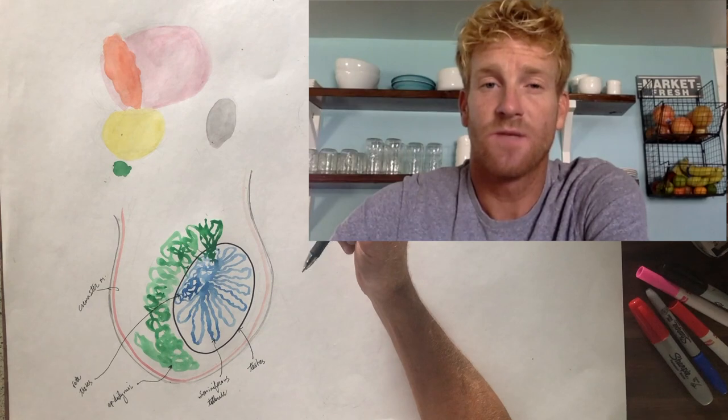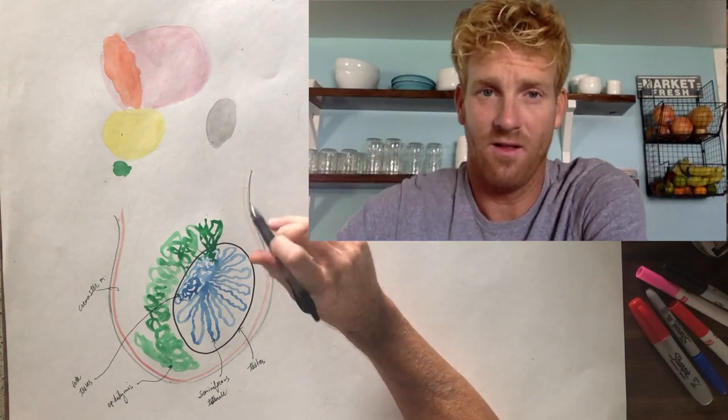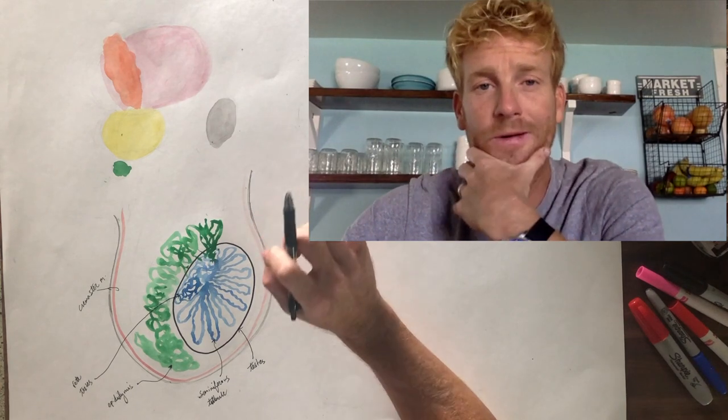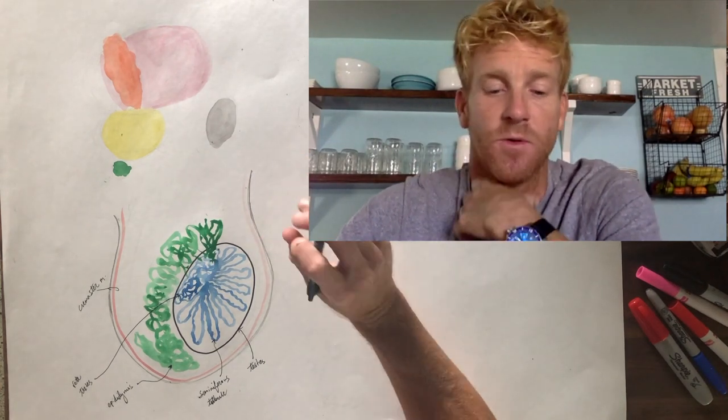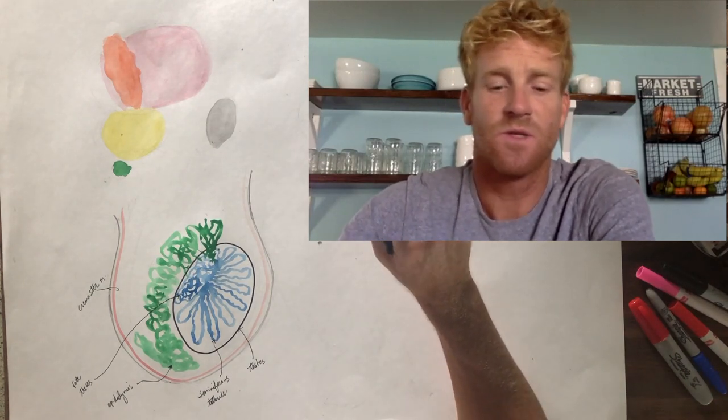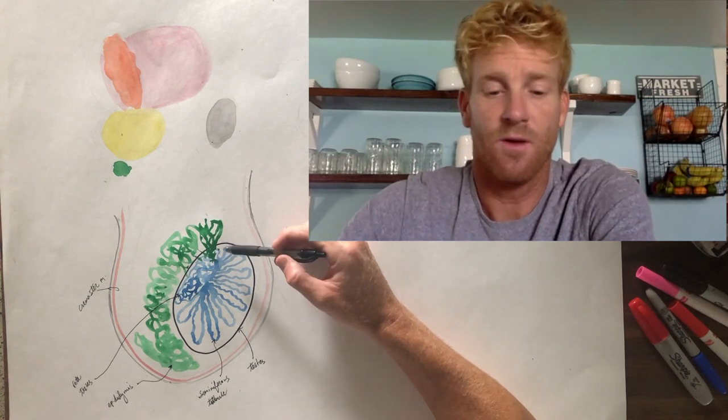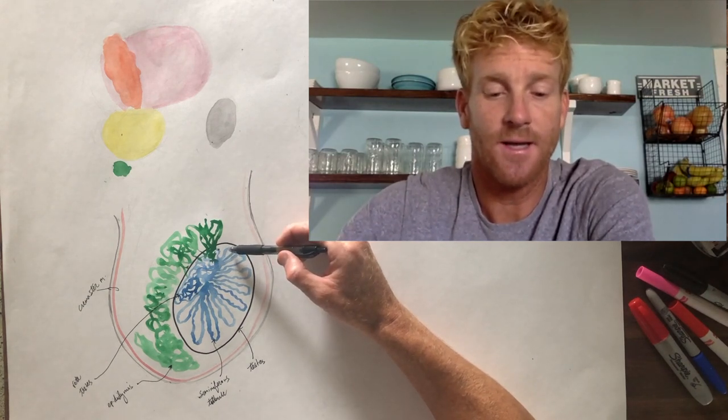It takes about three weeks for sperm to travel from the seminiferous tubules in blue all the way down to the tail of the epididymis, which is in green. And during those three weeks, they've developed. Now, once they reach the tail of the epididymis, the sperm can swim, they are ready, they're fully mature, and they are ready to fertilize an egg.